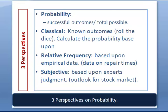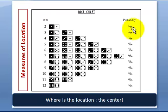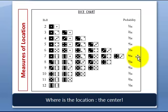As background, since we'll use dice a lot: if I roll two dice and sum the outcomes, the probability of a total of two is 1/36 because there's only one way — a one on each die. A total of three is 2/36, and the most likely total is seven, which is 6/36.